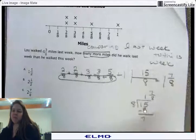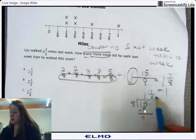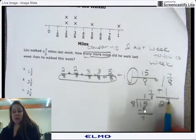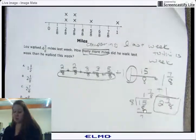So you have 1 and 7/8. Wait, wait, wait, wait. Don't forget. You have to add this one right here plus one equals 2 and 7/8. So this week he walked 2 and 7/8.